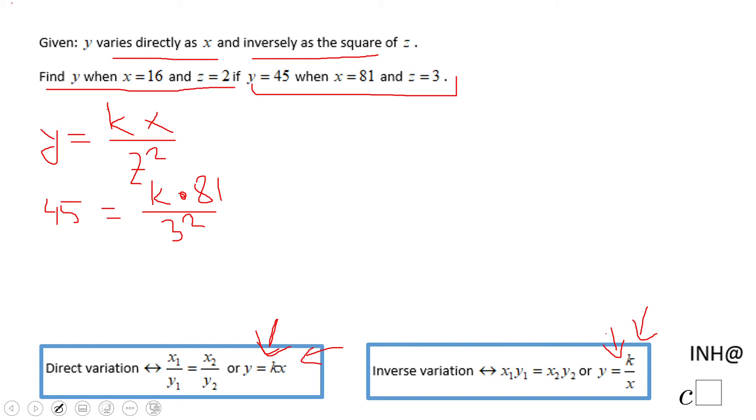Right, because we have 45 equals k times 81 over 9. 9 goes into 81 nine times, so we end up with a simpler equation: 9k equals 45. We divide by 9, and 45 divided by 9 is 5. So the constant k equals 5.